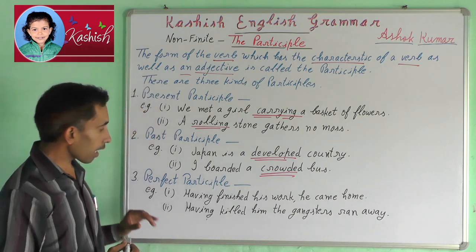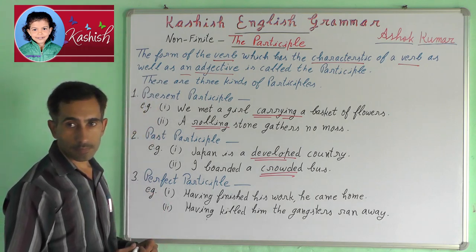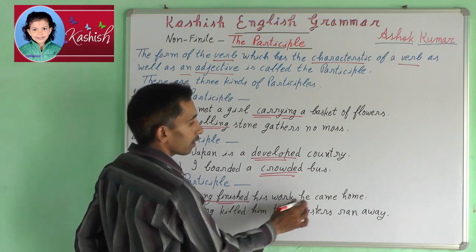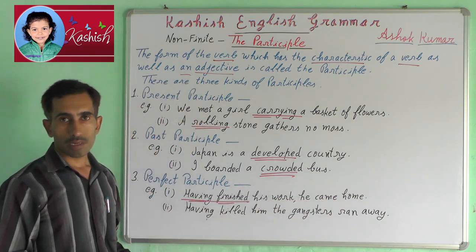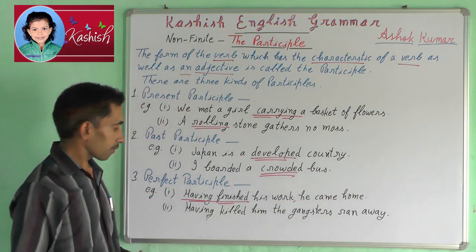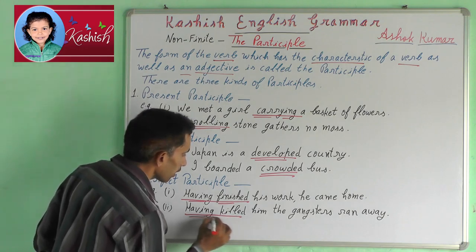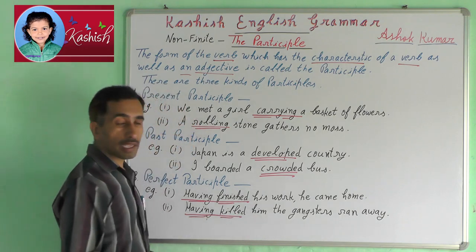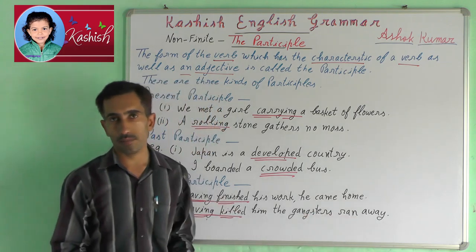Third, perfect participle — for example: 'Having finished his work, he came home.' Next: 'Having killed him, the gangsters ran away.'